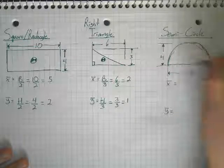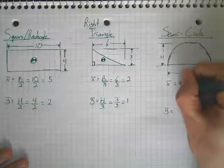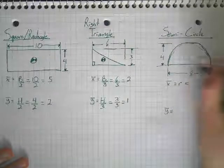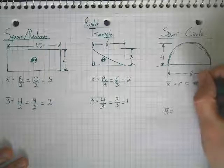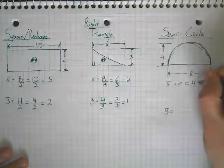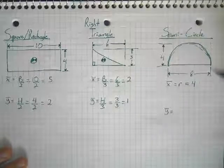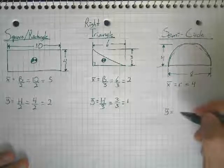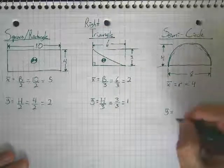Here we go. x-bar in this setup is just going to be our radius. So, our radius, if our diameter here is 8, our diameter is 8, our radius is 4, which is also my, I gave the dimension there for the height. So, that's my radius in this setup.